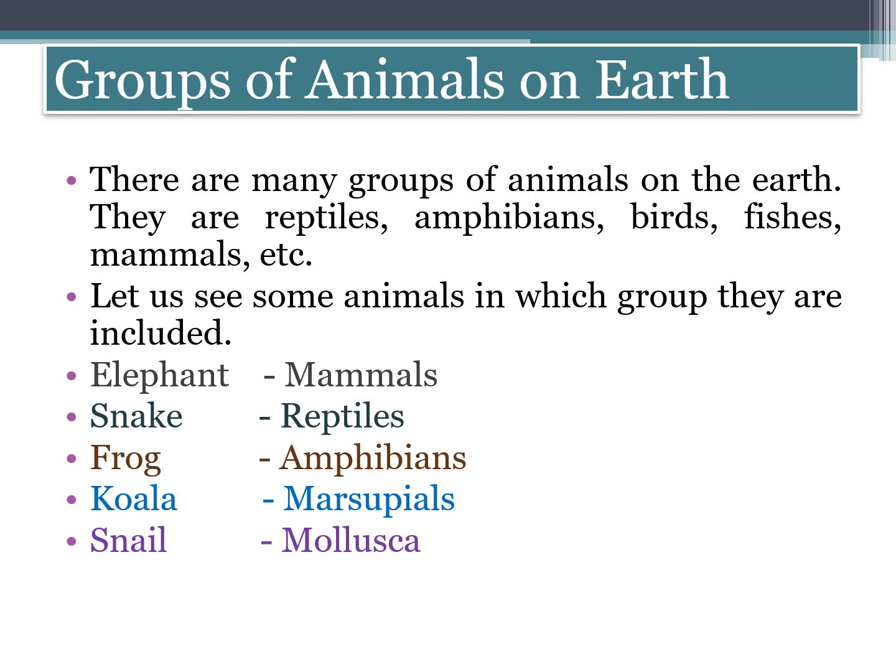First one: elephant. Elephant includes mammals, snake includes reptiles, frog includes amphibians, koala includes marsupials, and snail includes mollusca.